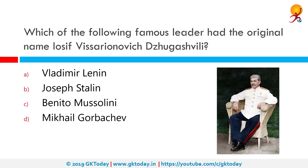Which of the following famous leaders had the original name Ioseb Vissarionovich Dzhugashvili? The correct answer is Joseph Stalin. Joseph Stalin was a Georgian revolutionary and Soviet politician who led the Soviet Union from the mid-1920s until 1953 as General Secretary of the Communist Party of the Soviet Union and Premier.